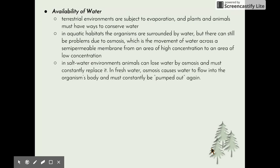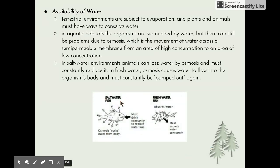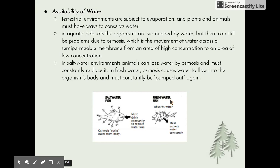In saltwater environments, animals can lose water by osmosis and must constantly replace it. In freshwater, osmosis causes water to flow into the organism's body and it must be constantly pumped out. A saltwater fish is surrounded by salty water where the concentration of water is less outside the fish, so water constantly leaves the fish and it must drink to maintain water levels. Freshwater fish, whose cells are slightly saline, constantly gain water that rushes in, and if they didn't excrete it constantly, they would effectively drown themselves.